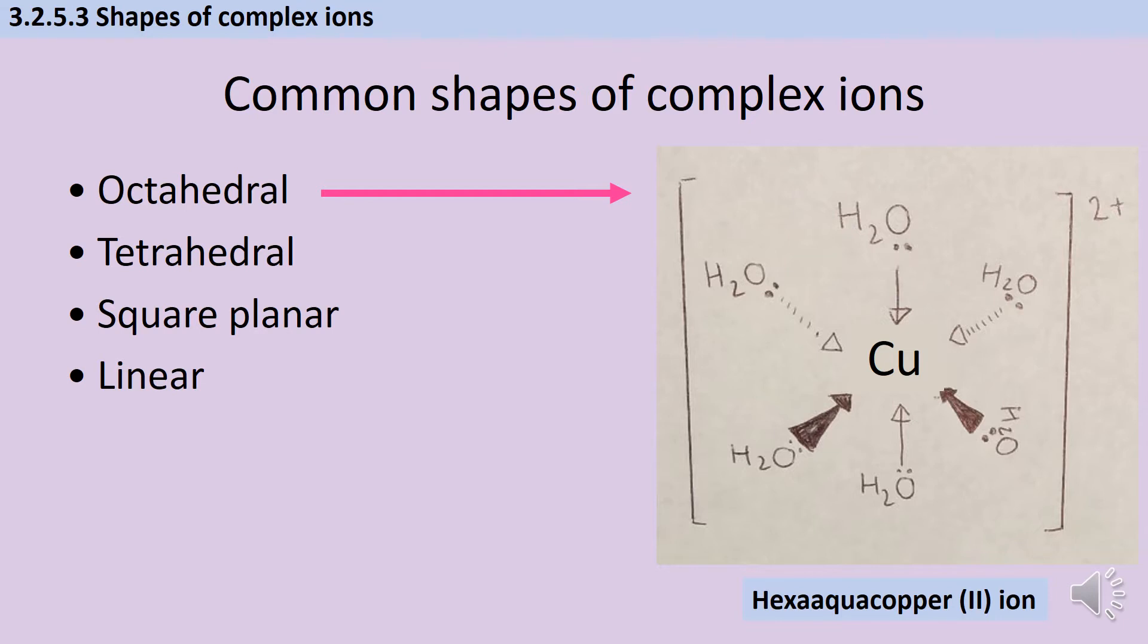So there are really four options. You can have a complex ion that is octahedral, where there are six bonding ligands, tetrahedral where there are four, square planar where there are also four, and linear where there are just two.